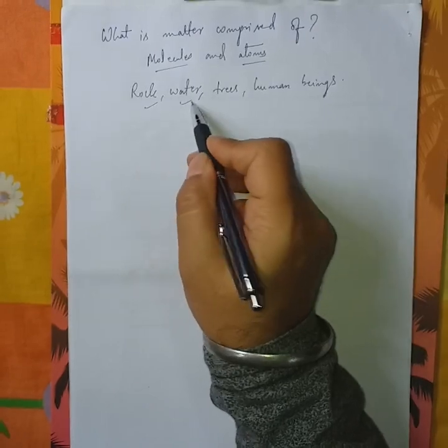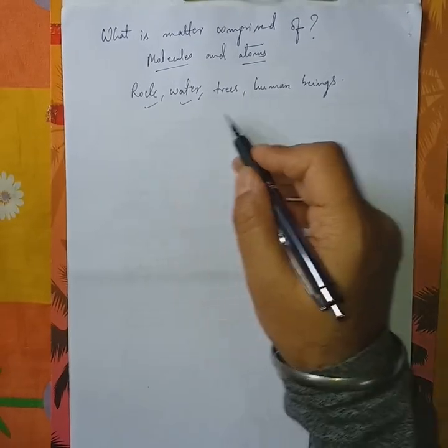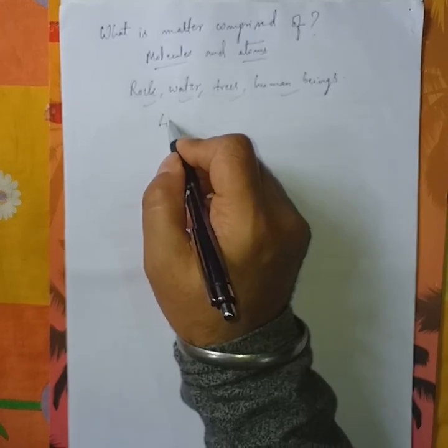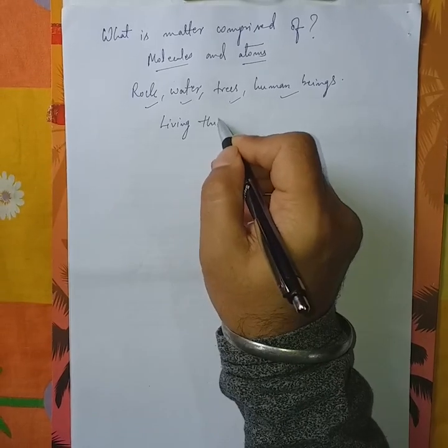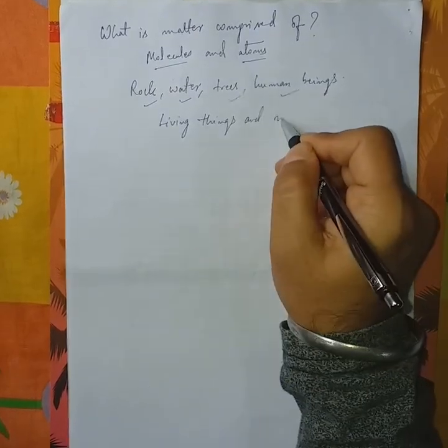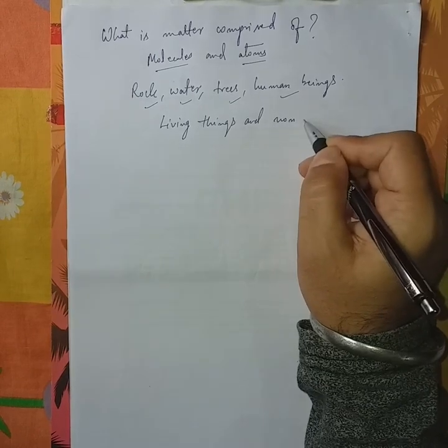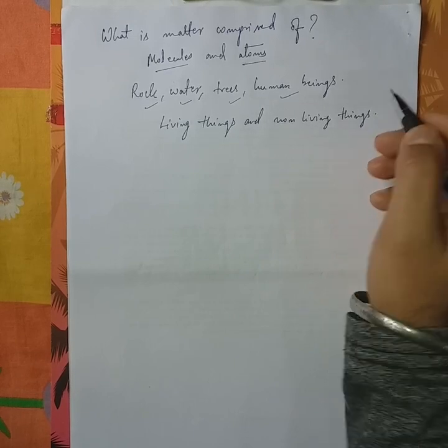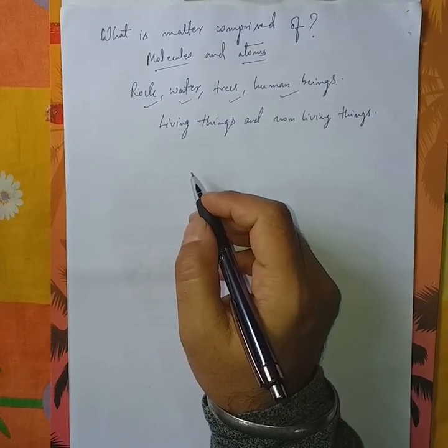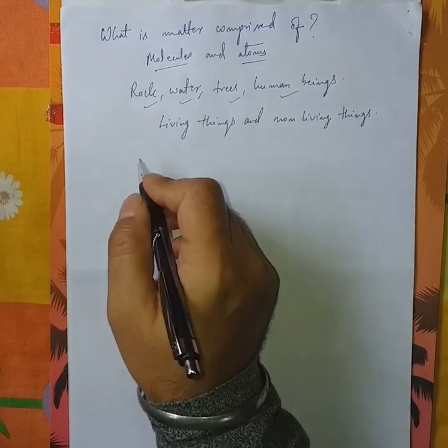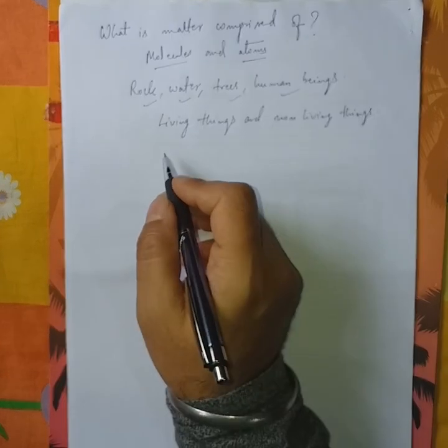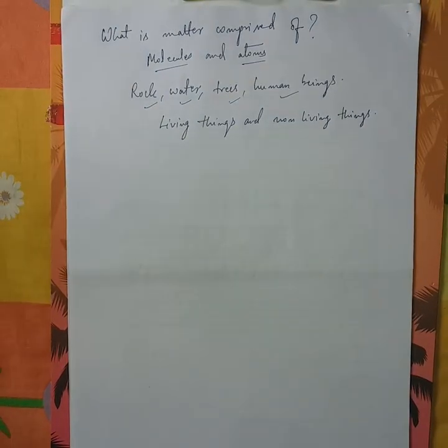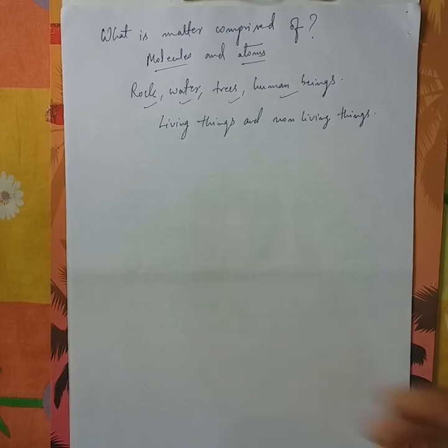human beings around us. So here, rock, water, they are non-living things. Trees, human beings are living things. But living things and non-living things, both are made up of molecules and atoms.